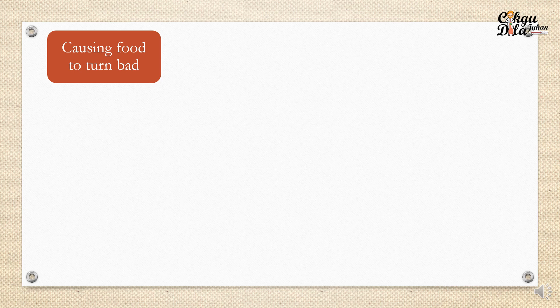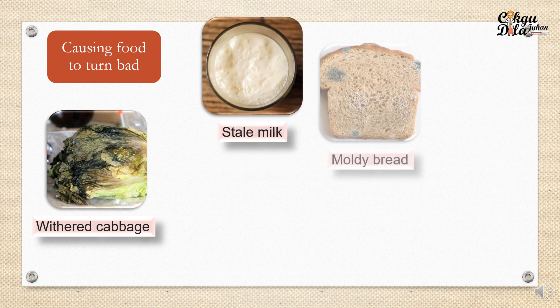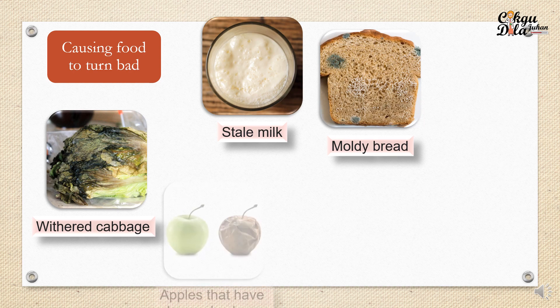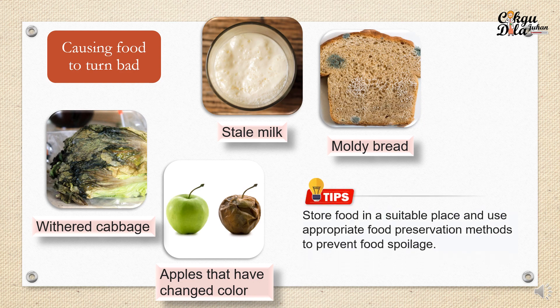The harmful effect of microorganisms is that they can cause food to turn bad. The cabbage becomes withered, the meat becomes stale, the bread becomes moldy, and fruits change their colors. This shows the action of microorganisms. For example in this figure, the apples change color from green into black or brown. This is the tip: we need to store food in a suitable place and use appropriate food preservation methods to prevent food spoilage. Either we can put it in the fridge. There are several types of food preservation, and for standard six you will learn it in the next chapter, food preservation.